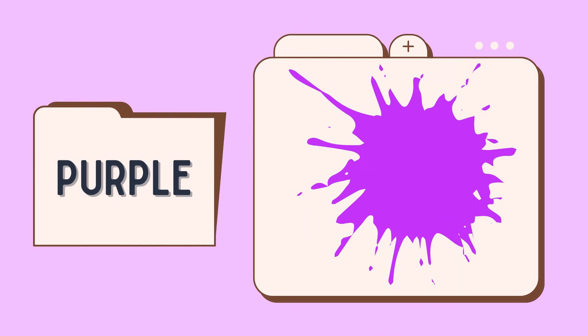Our fourth colour is purple. Purple. Can you say purple? Very good. Now let's spell: P, U, R, P, L, E — purple.